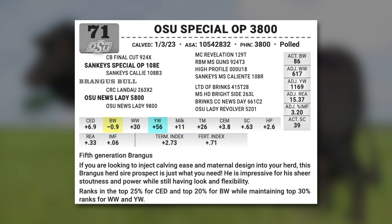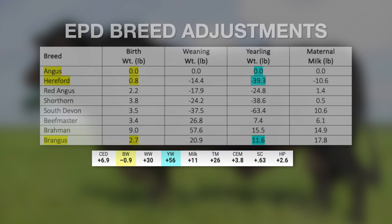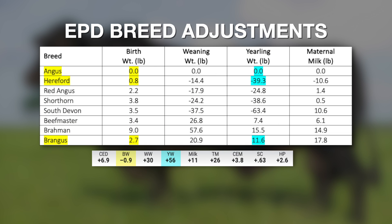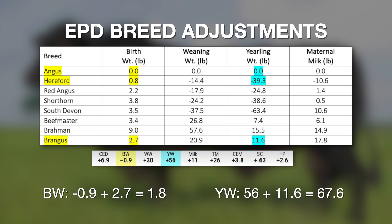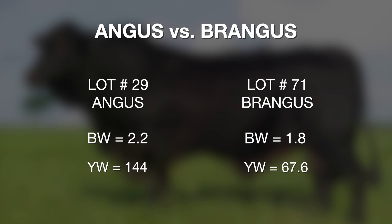The Lot 71 Brangus bull in the Cowboy Classic sale book has a birth weight EPD of negative 0.9. The additive adjustment to that is 2.7, which effectively puts his adjusted birth weight EPD at 1.8, compared back to the Angus EPD of 2.2. His yearling weight EPD from the Brangus Registry is 56, but we add 11.6 to that to compare it back to the Angus base, making his adjusted yearling weight EPD 67.6. The Angus bull, mated to an equal set of cows, would sire calves about 76 pounds heavier than the Brangus bull based on those numbers.